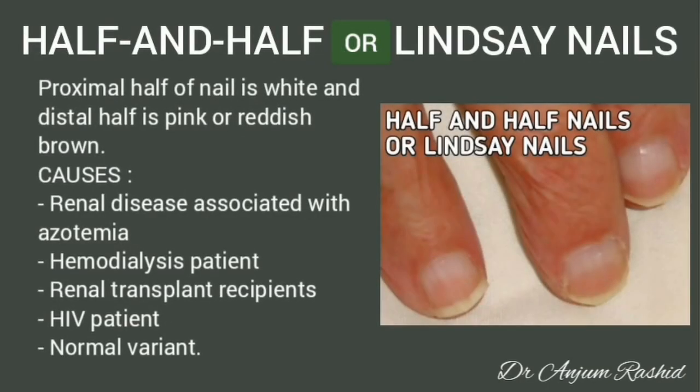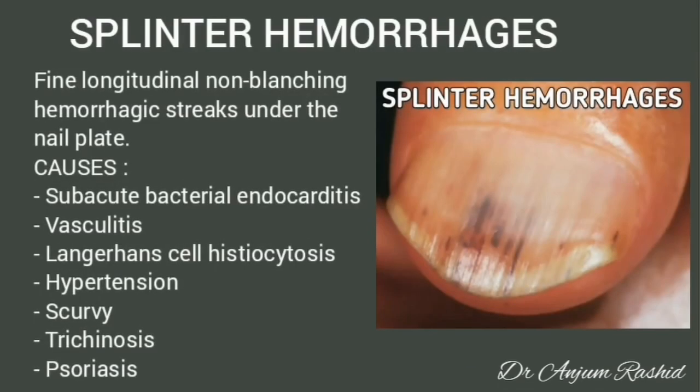Half-and-half nails, also known as Lindsay nails: the proximal half of the nail is white and the distal half is pink or reddish brown. Causes include renal disease associated with azotemia, hemodialysis patients, renal transplant recipients, HIV patients, or it may be a normal variant.